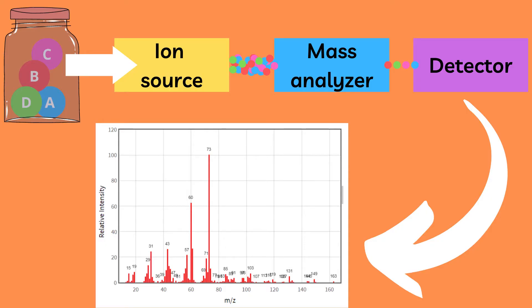Therefore, the three main components of any mass spectrometer are: one, an ionization source; two, a mass analyzer; and three, a detector.